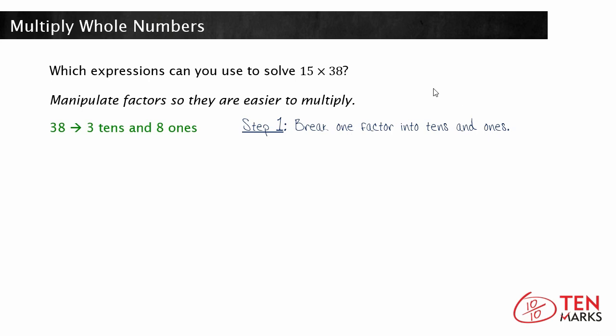Let's break 38 into 3 tens and 8 ones. Next you're going to multiply both terms by the other factor. The other factor in this problem is 15, so 15 times 30 and 15 times 8.